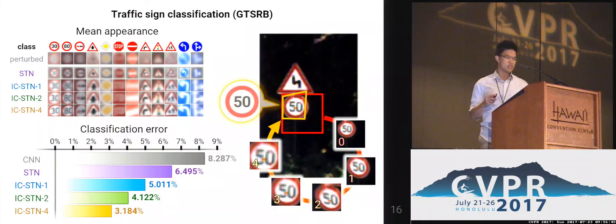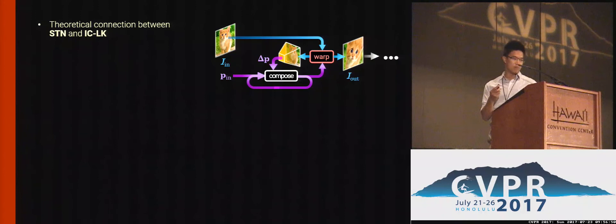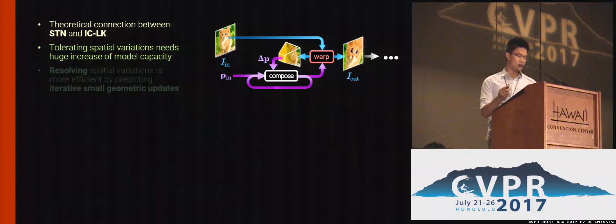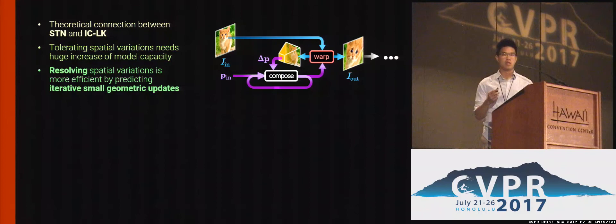In summary, we established a theoretical connection between STN and Lucas-Kanade, and we advocated that tolerating spatial variations is very inefficient. Resolving these spatial variations explicitly is a lot more efficient by predicting iterative small warp updates. Please come to our poster for more in-depth discussions. Thank you very much.